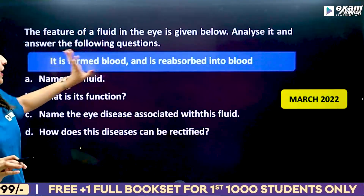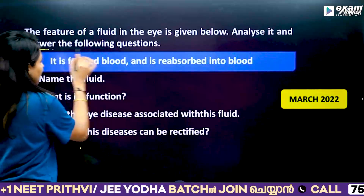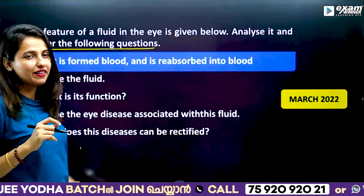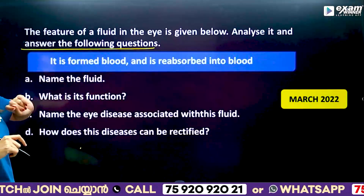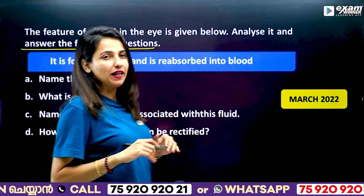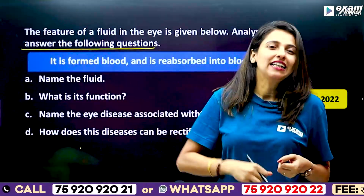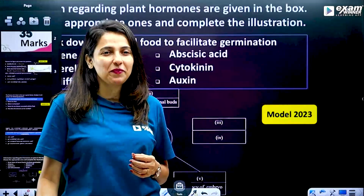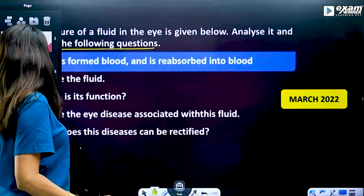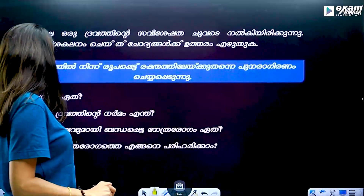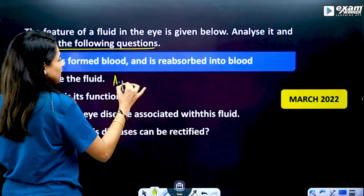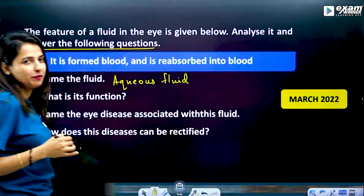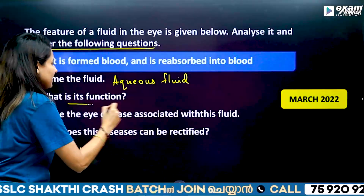The next question: the feature of a fluid in the eye is given below — it is formed from blood and reabsorbed into blood. We describe this fluid as Aqueous fluid. Aqueous fluid is the main thing here.